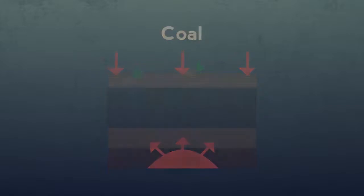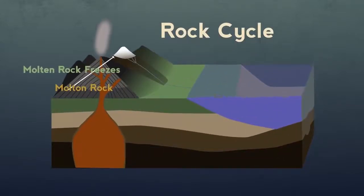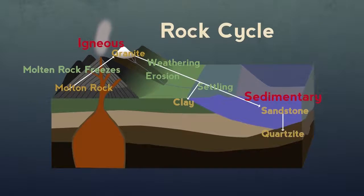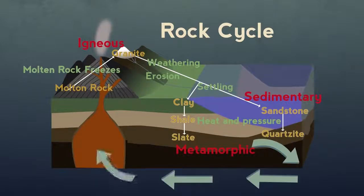So to summarize: molten rock solidifies, forming igneous rock like granite. It gets weathered — broken apart — then eroded and transported to form sedimentary rocks like sand and clay. These can get heated and compressed to form metamorphic rocks like shale and slate. The movement of the earth's tectonic plates carries them into the mantle where they melt, starting the cycle all over again.